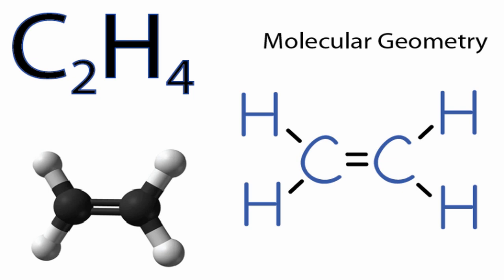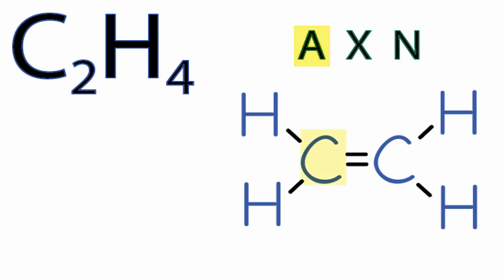We can also use the AXN notation to figure out the molecular shape. A is the central carbon. X is the number of atoms bonded to that carbon: 1, 2, 3, so we have AX3.